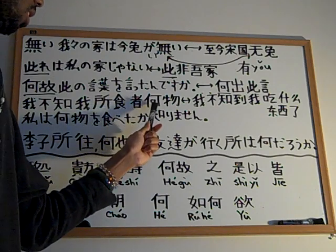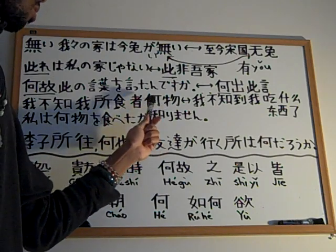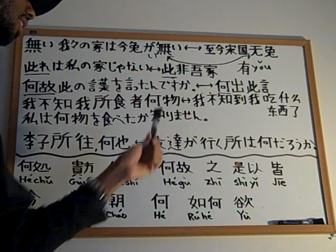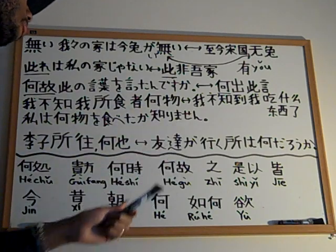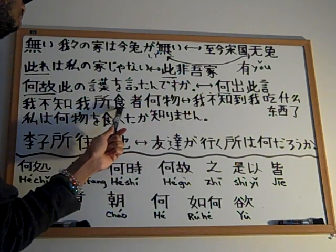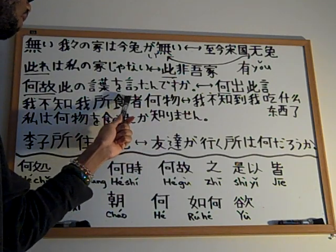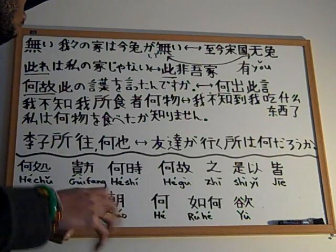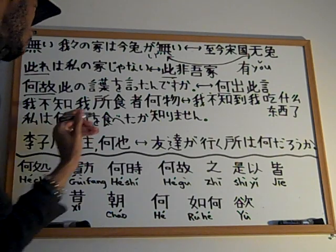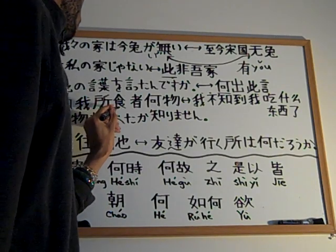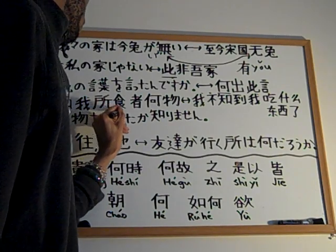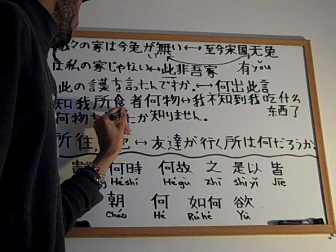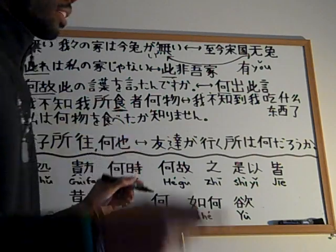And 何物 (hé wù) is basically like 什么东西 in modern Chinese — 'what thing.' That's how they express it in classical Chinese. So 食 means 'eat,' but in modern Chinese they always use 吃 (chī) instead — 食 is the classical form.